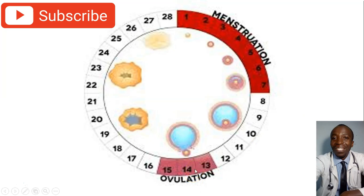When ovulation has happened, there are many changes that occur in your body. When the time for ovulation has reached, your cervical mucus — the mucus coming from your cervix — is going to be very thick and very slippery. When you are not ovulating, your cervical mucus is normally thin and dry. When you are ovulating, it becomes thick and slippery.